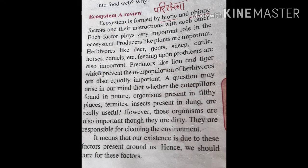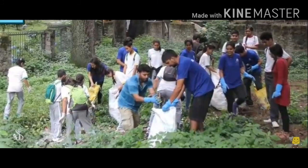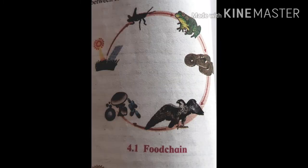Animals like termites and insects present in dumps are really useful. Those organisms are also important though they are dirty — they are responsible for cleaning the environment. Our existence is due to these factors present around us, hence we should care for those factors. Here is the food chain and different trophic levels in the food chain.